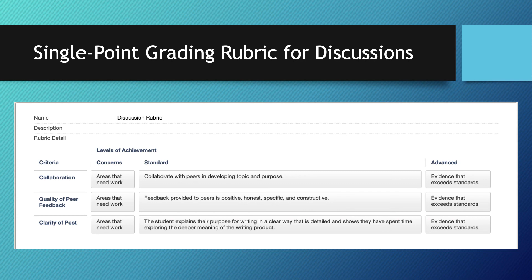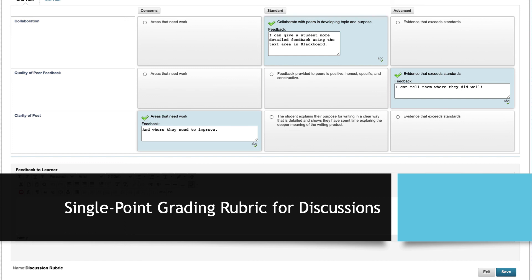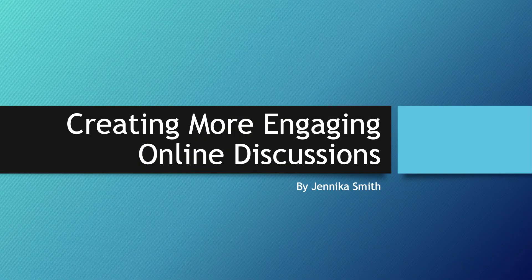For instance, if I'm having students work on their purpose for writing this week, using the discussion area to share with peers and provide feedback, the objective I want to assess might be 'collaborate with peers in developing topic and purpose.' On my rubric, I might also add columns for quality of feedback and clarity of writing, and I provide feedback based on where they fall relative to the standard. So that's it — those are some tips to change up your discussions for the coming semester. Good luck!